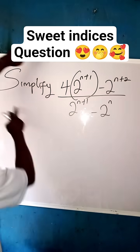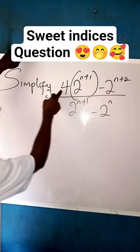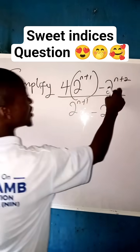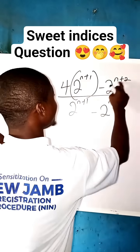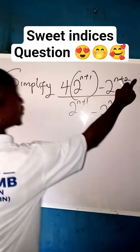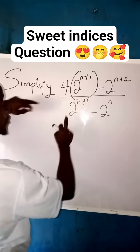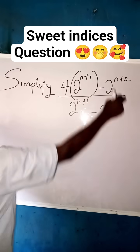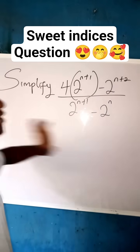Now, if you have something like this, simplify: 4 times 2 to the power of n plus 1, then minus 2 to the power of n plus 1 plus 2, all over 2 to the power of n plus 1 minus 2 to the power of n.